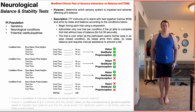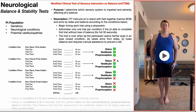Condition two is where the eyes are closed and you're standing on a firm surface. Because of the firm surface, you still have proprioception and somatic sensation, and vestibular information is unchanged. But because the eyes are closed, visual information for balance is eliminated. The brain can only rely on vestibular information and proprioception, making condition two more difficult than condition one. Struggling in condition two relative to condition one indicates an over-reliance on visual input and ineffective integration of vestibular and/or proprioceptive information.